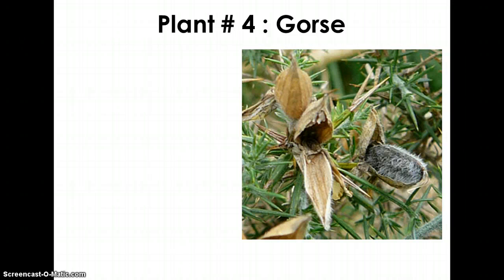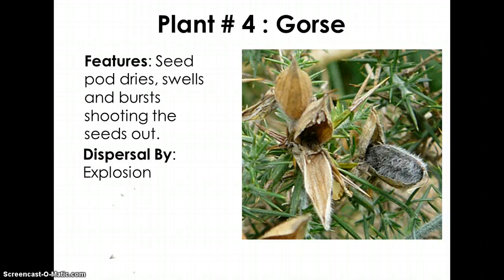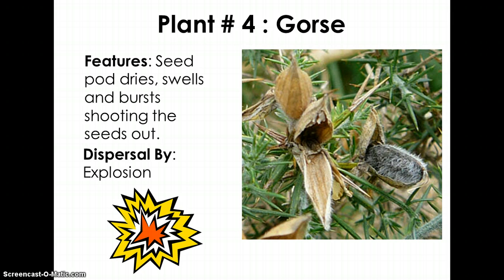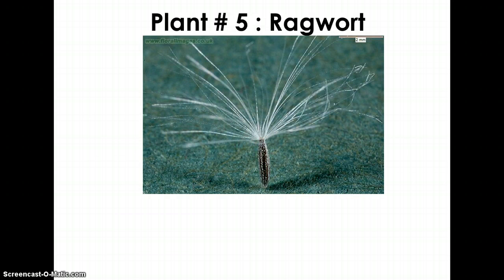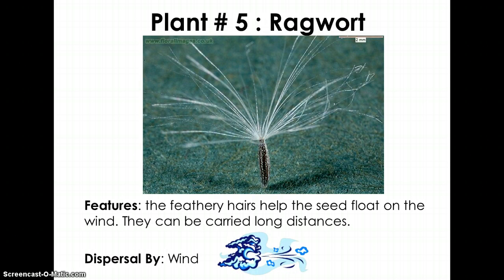Plant number four is a gorse — the seed pod dries, swells, and bursts, shooting the seeds out. This seed is dispersed by explosion. Plant number five is the ragwort — feathery hairs help the seed float on the wind, and it can be carried long distances. This seed is dispersed by wind.